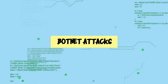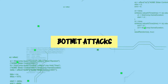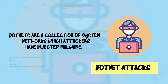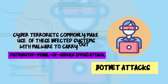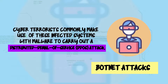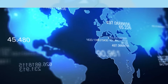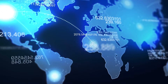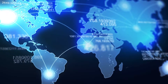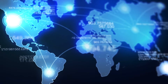Coming in at number four: botnet attacks. Botnets are a collection of system networks into which attackers have injected malware. Cyber terrorists commonly make use of these infected systems to carry out a distributed denial of service, or DDoS, attack. It is frequently difficult to spot DDoS attacks because the systems used are scattered worldwide.